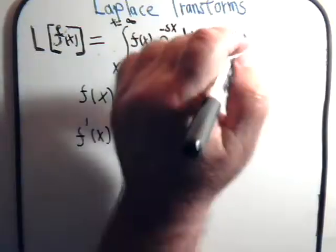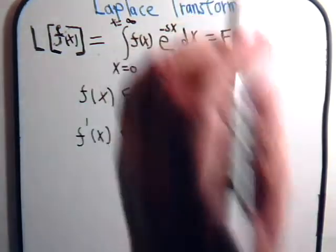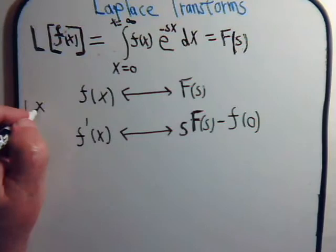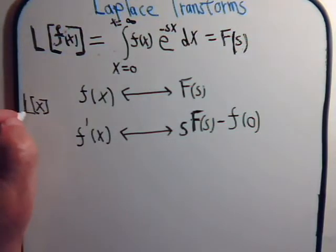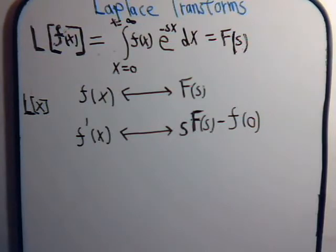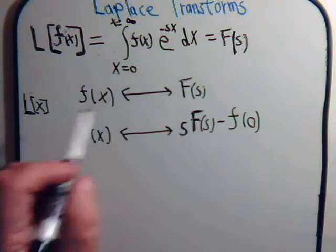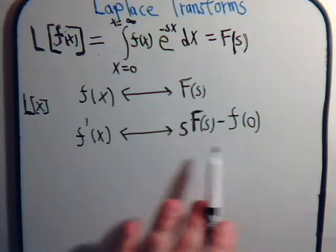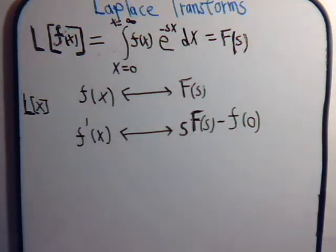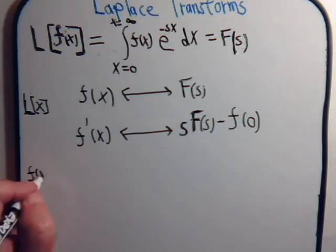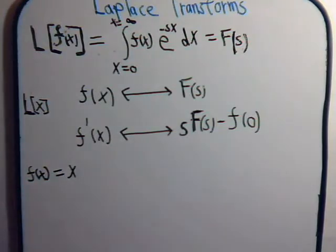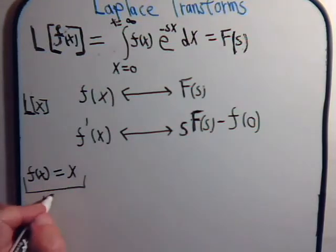The first one we want to take is just a real simple one that we haven't considered yet. Suppose we want to take the Laplace transform of just x. We could just put x into our formula, f(x) would just be x integrated by parts, but let's see if we can finesse it using this relationship. So here, f(x) is just x, and its corresponding Laplace transform we're calling f(s).